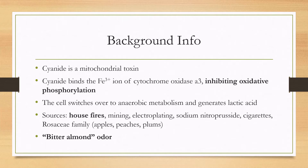Common sources include house fires, mining, electroplating, iatrogenic causes such as sodium nitroprusside, and also cigarettes — which can be why people who smoke cigarettes start to lose their vision. An uncommon source for ingestion includes eating the seeds or pits from the rosaceae family, such as apples, peaches, and plums. Over half of people can smell a bitter almond odor when exposed to cyanide, and that can be important because it sometimes shows up on exam questions.